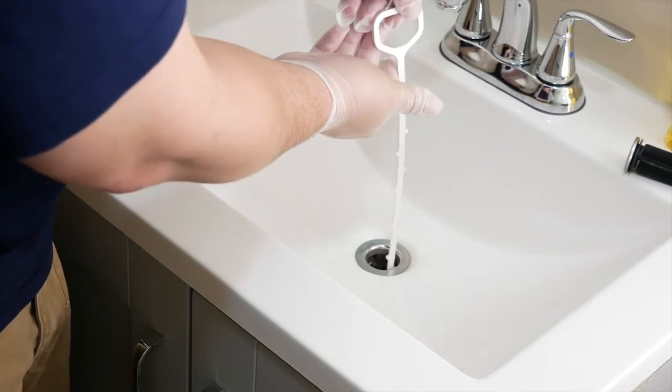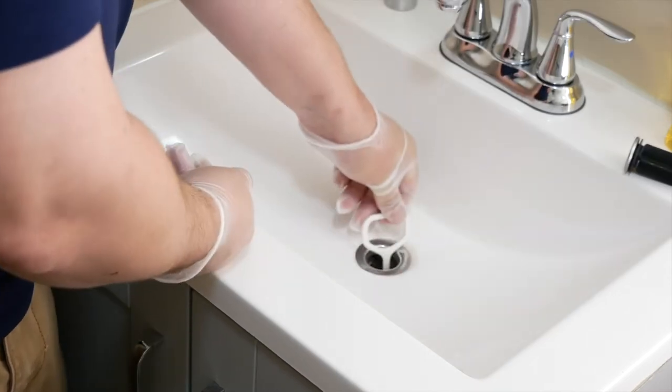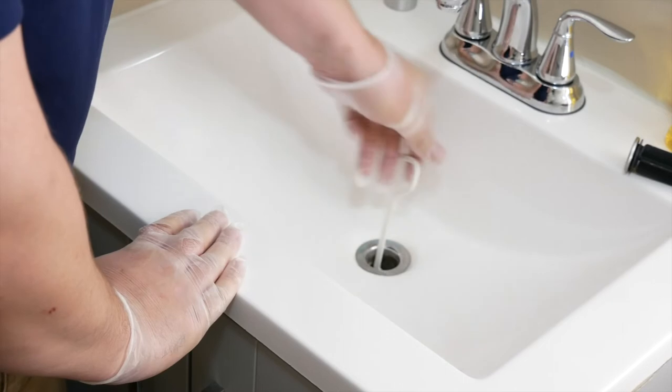Force the tool down as far as you can and twist it until it breaks through the clog. Stop pushing when the handle is the only part still protruding from the drain. Wiggle the snake and spin it around the inside of the drain to grasp all of the junk clogging it.